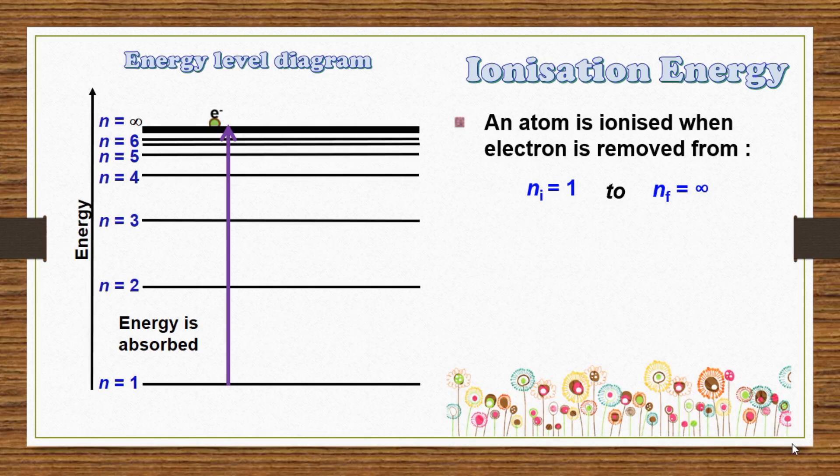An atom is ionized when an electron is removed from n equal 1 to n equal to infinity. The value of ionization energy can be calculated by using the following equation.